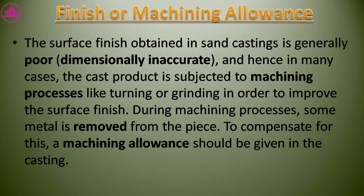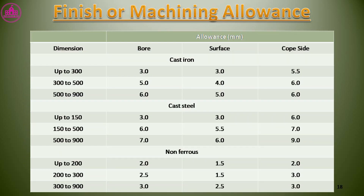The surface finish obtained in sand castings is generally poor, and hence in many cases the cast product is subjected to machining processes like turning or grinding to improve the surface finish. During machining, some metal is removed from the piece. To compensate for this, a machining allowance should be given in the casting.